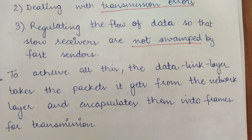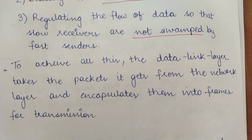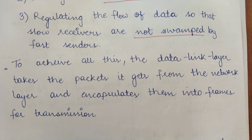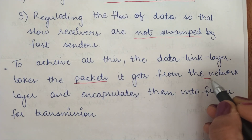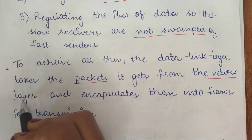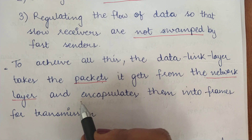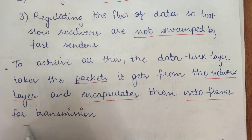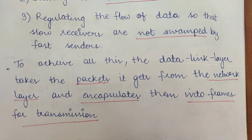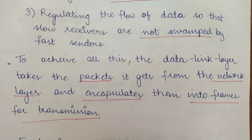These are the three basic functionalities of the data link layer. To achieve all this, the data link layer takes the packets it gets from the network layer. When those packets are received by the data link layer, they are encapsulated in the form of frames for transmission. So the data unit at the network layer is called packets, and at the data link layer it is known as frames.